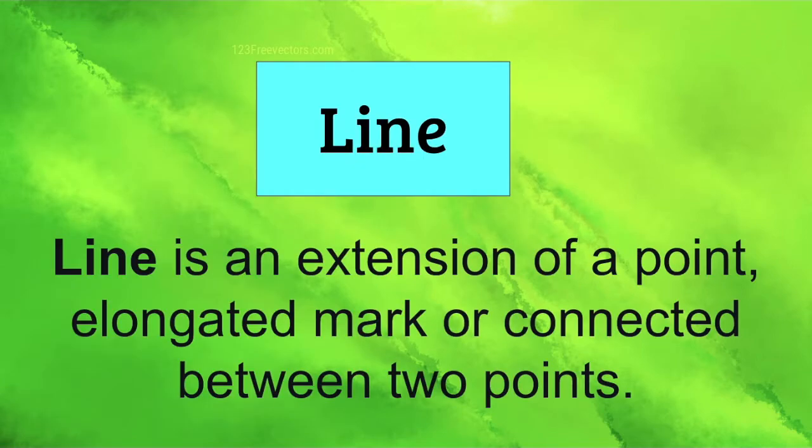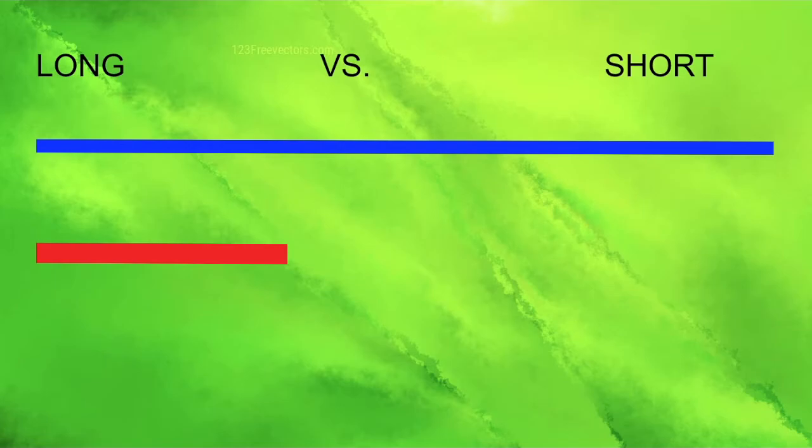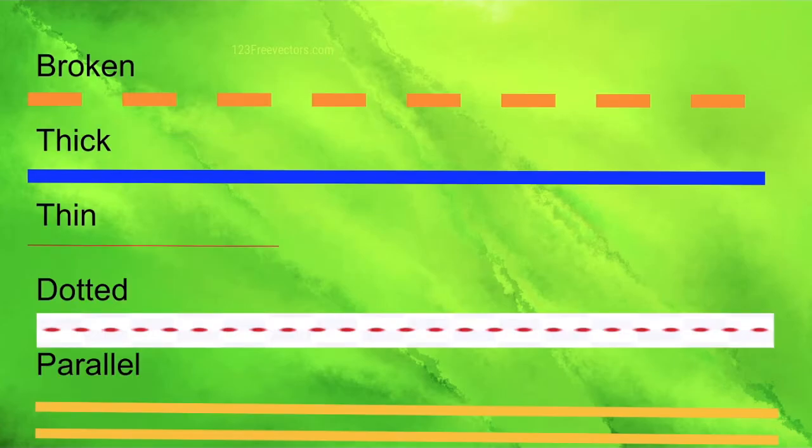Next we have line. Line is an extension of a point, elongated mark or connected between two points. Just as you think, it's a line, one right after the other. There are different types of lines and you need to utilize lines in your designs. Long versus short. Broken lines versus thick lines and thin lines. Dotted lines. Parallel lines.